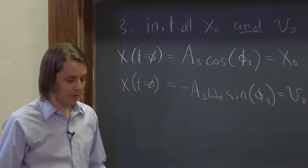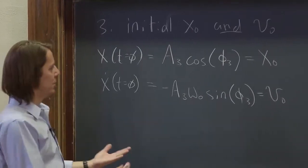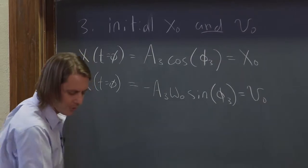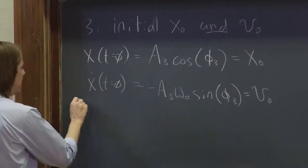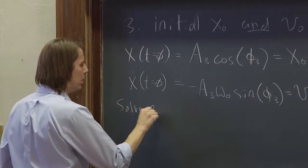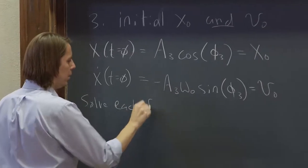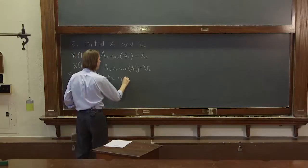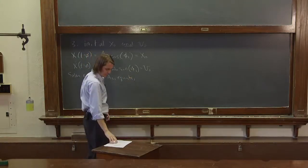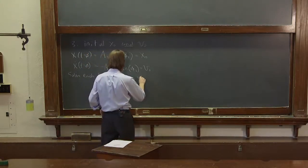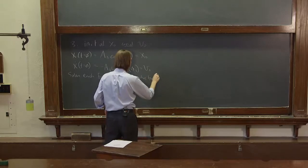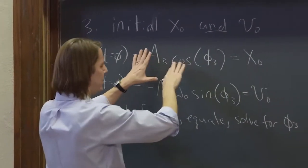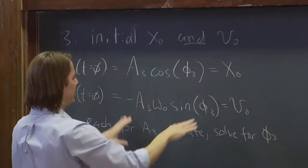So this is a little harder, nothing is equal to zero. But we still have two equations, two unknowns, it's still solvable. So the strategy is solve each for a three, equate, and then solve for phi three. So I'm going to do all that in one step. This a three would become x-naught over cosine phi three.